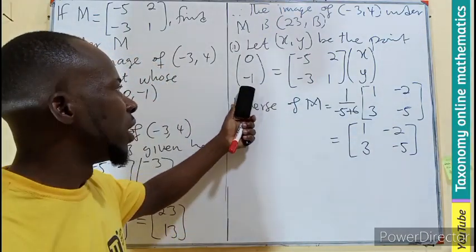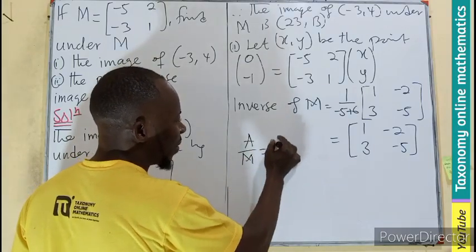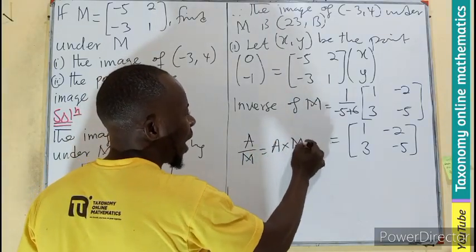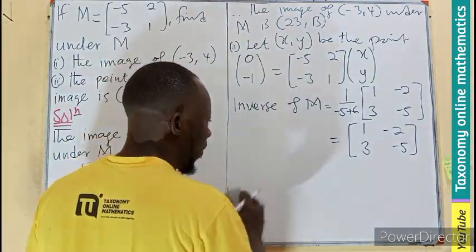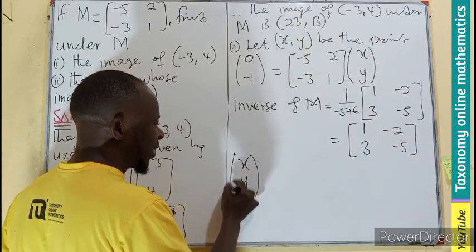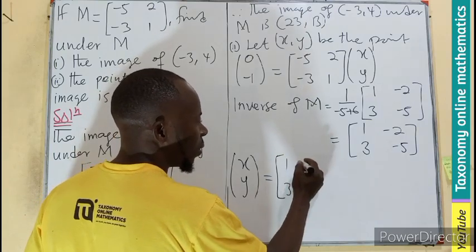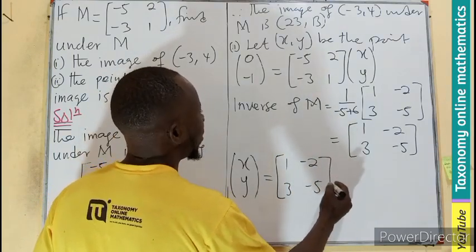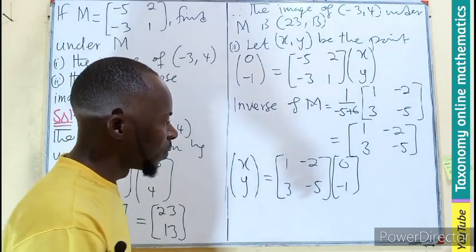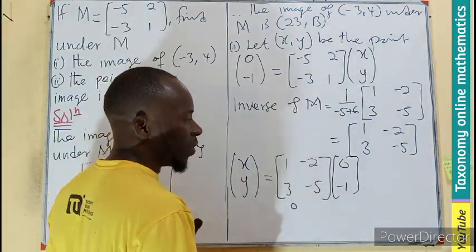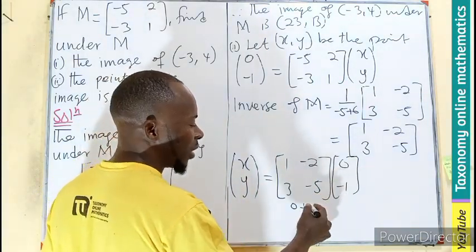And this inverse is coming all the way here to multiply this. You remember? The A over M is the same as A times M inverse. So the inverse is multiplying. So therefore, our (x, y), which is standing on its own, will become 1, 3, -2, -5, multiplied by 0, -1. And you know how we multiply it? 1 times 0, that will be 0. Plus -2 times -1, that will be 2.